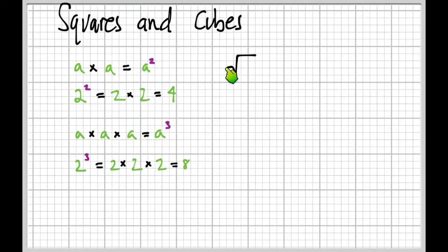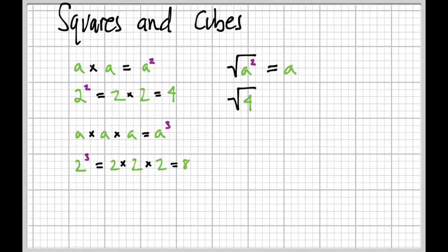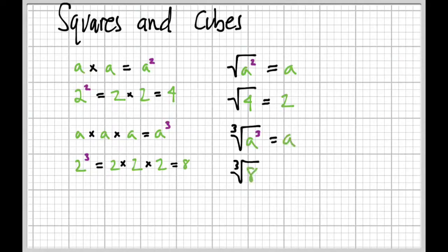That brings us to square roots and cube roots. The square root symbol asks: what number was squared to get this? The square root of four is two, because four is two squared — it's basically undoing a square. Similarly for cube roots: the cube root of eight is two, because eight is two cubed. That's a lot of information — hopefully most of it is stuff you've seen before. Best of luck, see you next time.